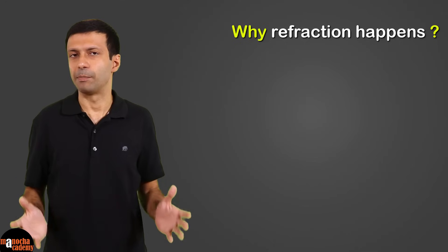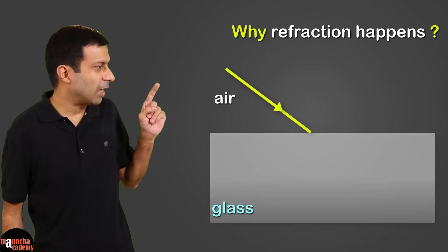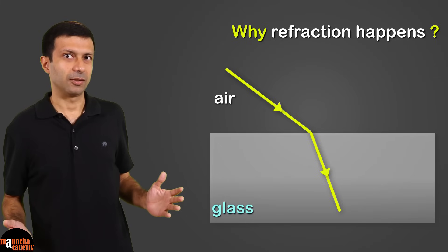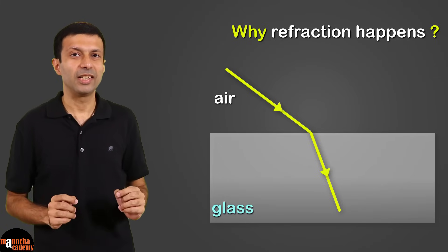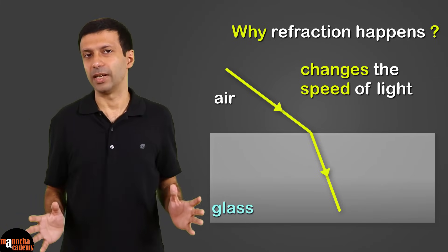Now that we know what is refraction, let's take a look why refraction happens. So what is the magic this glass block is doing to bend the light? The answer is it changes the speed of light.